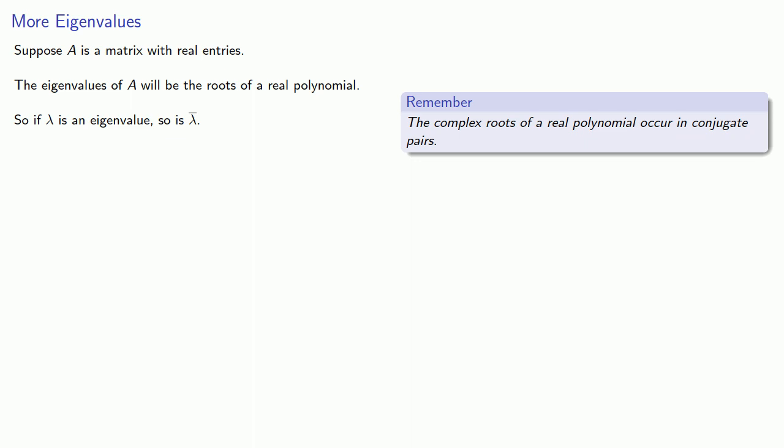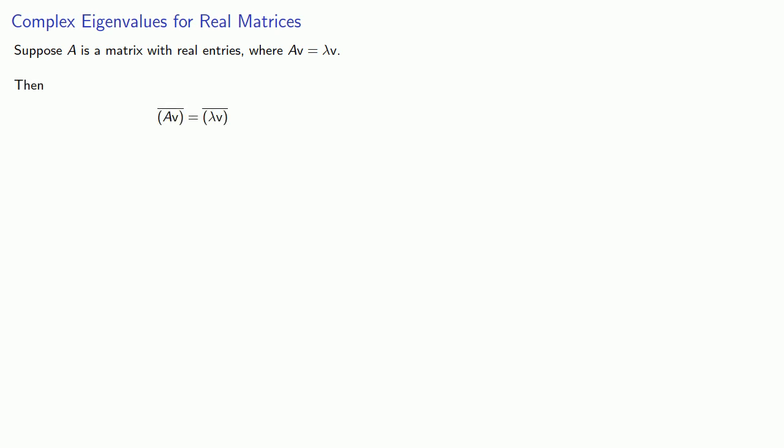The question you've got to ask yourself is: what's the corresponding eigenvector? Suppose A is a matrix with real entries where AV equals lambda V. Since the conjugate of lambda is also an eigenvalue, let's take the conjugate of both sides.